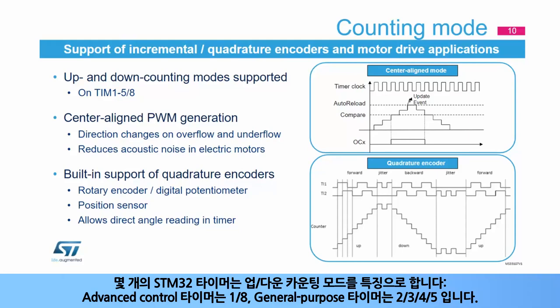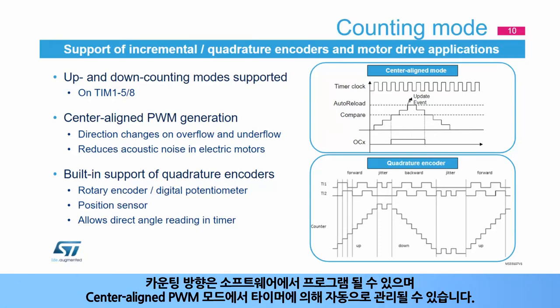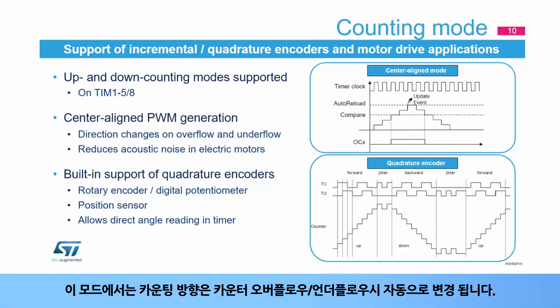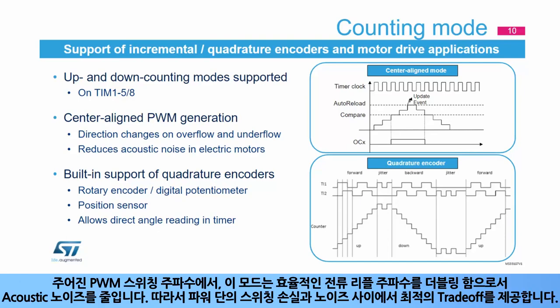Some STM32 timers feature up-down counting modes: advanced control timers 1 and 8, and general purpose timers 2, 3, 4, and 5. The counting direction can be programmed by software or automatically managed by the timer in center-aligned PWM mode. In this mode, the counting direction changes automatically on counter overflow and underflow. For a given PWM switching frequency, this mode reduces acoustic noise by doubling the effective current ripple frequency, providing the optimum tradeoff between the power stage's switching losses and noise.